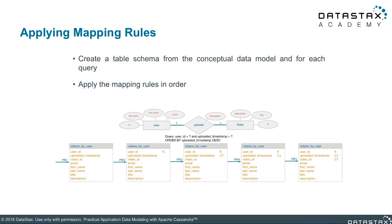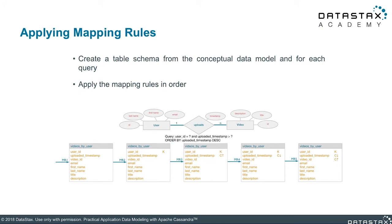Mapping rule number two: equality search attributes. We're modeling for a query, and the first thing we want to look for is what we're saying equals on. In this case we're querying for videos given a specific user ID, so we say equals on the user ID. Thus user ID becomes our partition key.